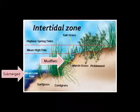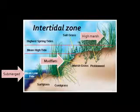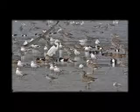This is where the smooth cord grass grows. It can tolerate high salt levels by secreting excess salt. Cord grass prevents erosion and provides shelter for many organisms. The high marsh area is only underwater during the highest tides each month.